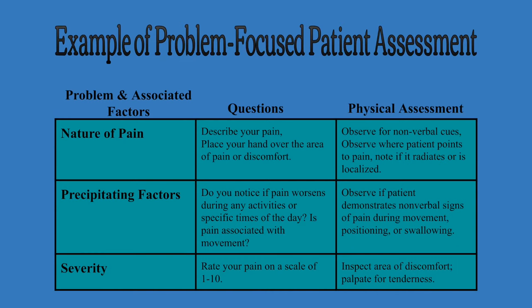Let's look at a problem-focused approach. Say a patient tells you they're having pain. You want to conduct the assessment around that pain. First, assess the nature of the pain — ask the patient to describe it or place their hand over the area. Observe for nonverbal cues, note where they point, and determine if the pain is referred or localized. When assessing precipitating factors, ask if pain worsens with certain activities or at specific times. Observe if the patient shows nonverbal signs of pain when moving, swallowing, or changing position. Nonverbal signs can include frowning, moaning, groaning, or agitation.